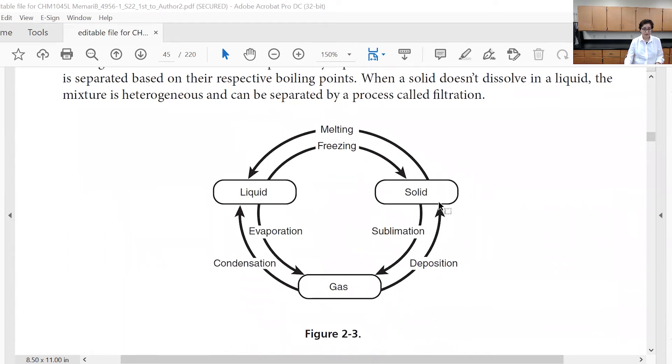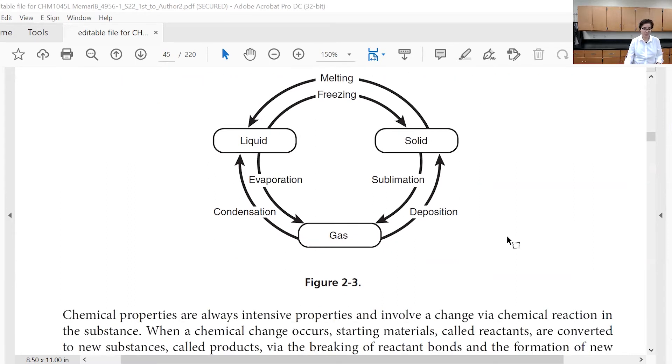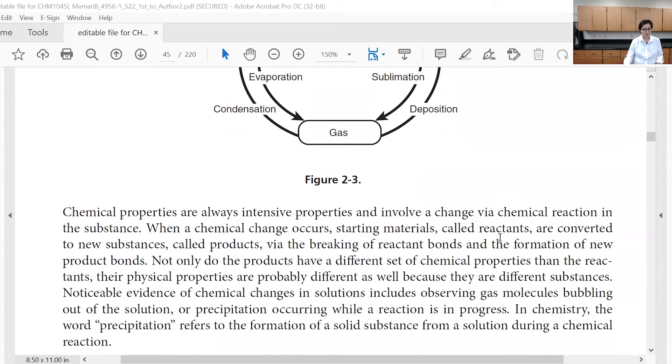For conversions, like physical change. Physical change - changing the state of the compound is considered a physical change. Liquid can go to solid or gas depending on the temperature. You increase the temperature, it goes to gas. You decrease the temperature, if you lower the temperature, it would freeze and go to solid.